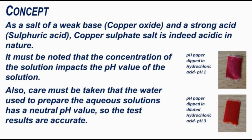As a salt of a weak base and a strong acid — copper oxide and sulfuric acid — it produces copper sulfate. That copper sulfate salt is indeed acidic in nature. It must be noted that the concentration of the solution impacts the pH value. Also, care must be taken that the water used to prepare the aqueous solution has a neutral pH value so that the test results are accurate — otherwise it may be defiled. Observe the images here: pH paper dipped in hydrochloric acid versus pH paper dipped in diluted HCl — observe the difference carefully. In this way, we can test the pH value of various chemicals.